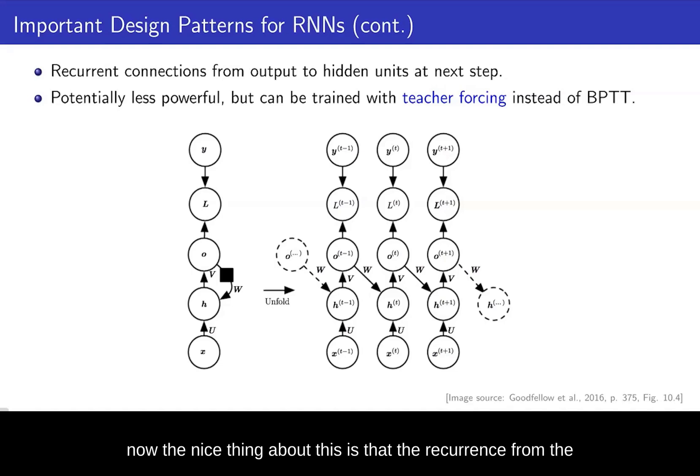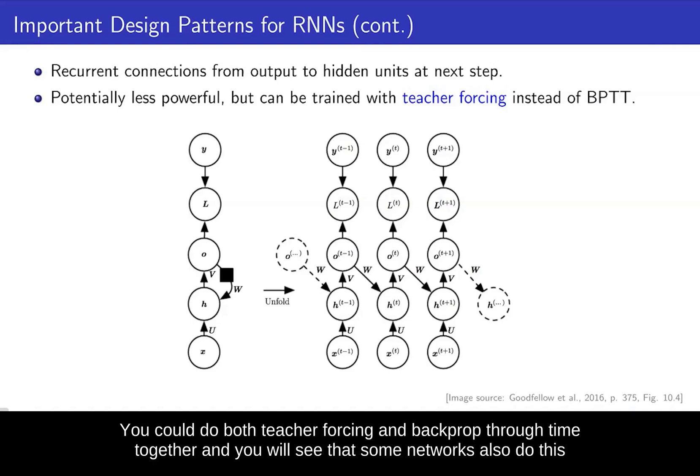Now, the nice thing about this is that the recurrence from the output to the hidden units is that you don't have to do backprop through time. So the hidden units only depend on the previous outputs, but they are independent of the previous hidden units themselves. So this way you could train the model using a method that we call teacher forcing. And you could do both teacher forcing and backprop through time together.